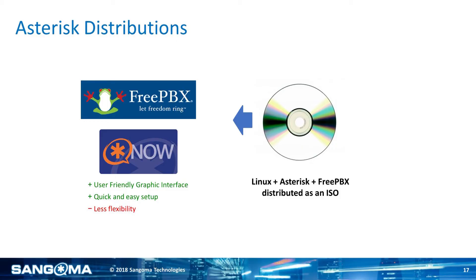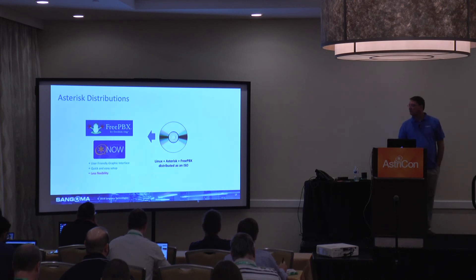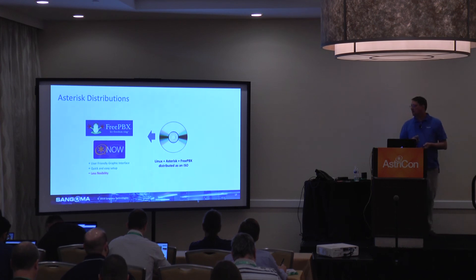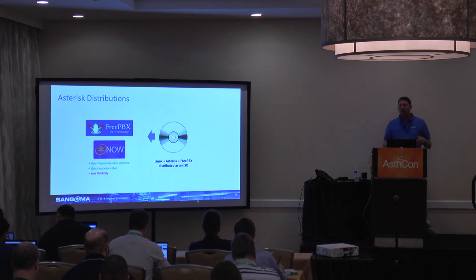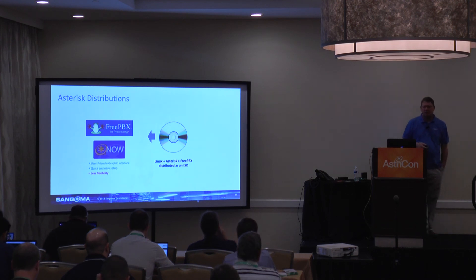For distributions, we have FreePBX — which quite a few people are using — and Digium had their own version called AsteriskNow. AsteriskNow will probably be going away since they're redundant; FreePBX is the most up-to-date and most supported, and that'll be the way moving forward. These are ISO images that contain Linux, Asterisk, and the FreePBX GUI all in one — an easy way to get up and going quickly. The FreePBX community is very good about keeping the Asterisk version up-to-date, so you don't have to worry about security issues.